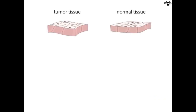DNA microarray technology permits an investigator to rapidly determine which genes are expressed by a cell or tissue. To understand how a DNA microarray works, let's consider an experiment that compares the pattern of gene expression in tumor tissue compared to normal tissue.